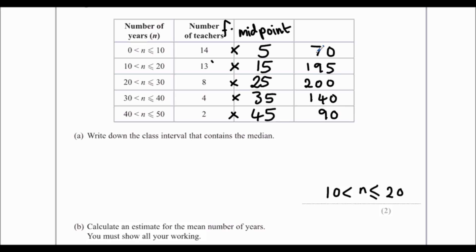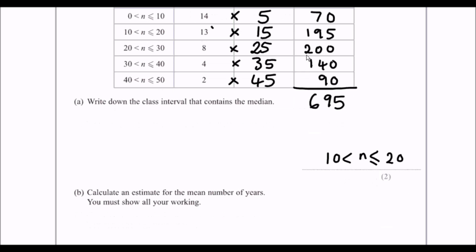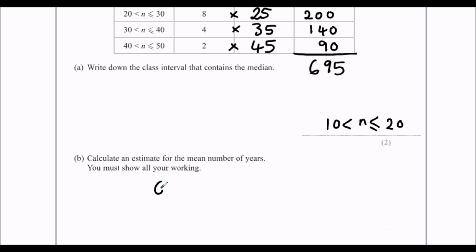Now, we've added up across, now we need to add them down. So the total number of years is all of these ones added up. Put it in the calculator. It should give you 695. And remember there are not 5 teachers, there are 41 teachers. In total they've taught for 695 years. So add them all up.